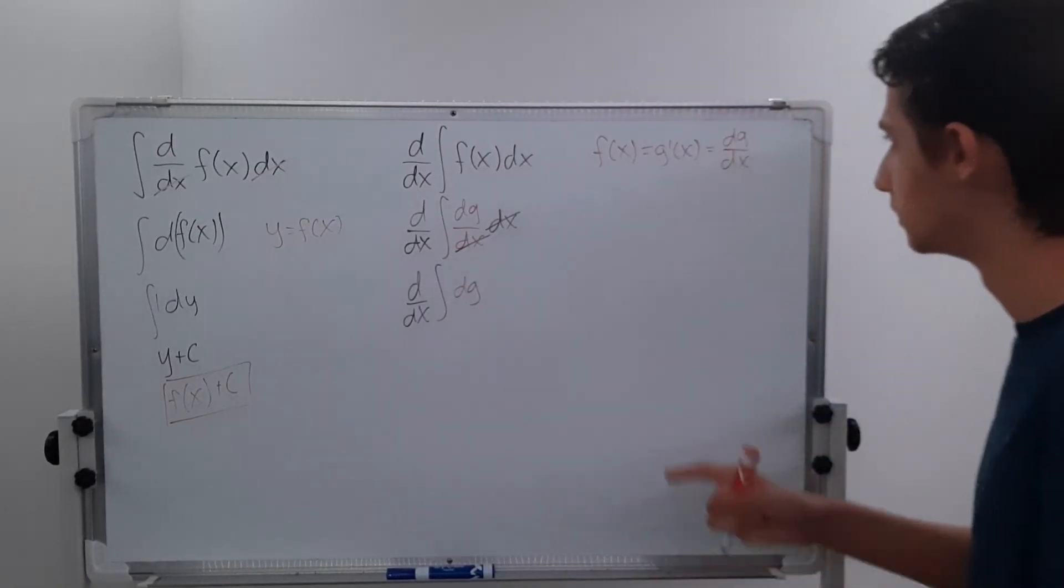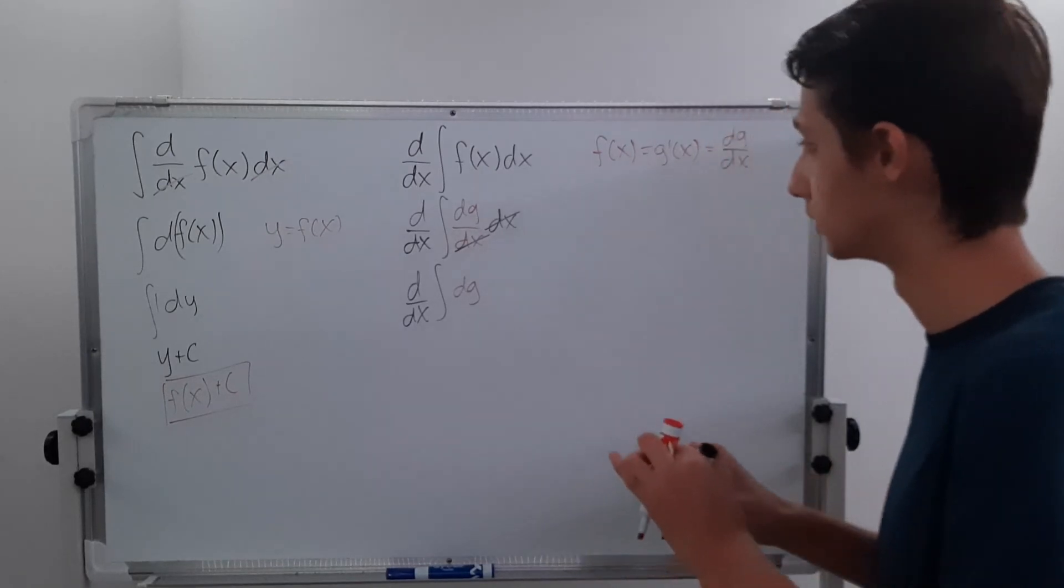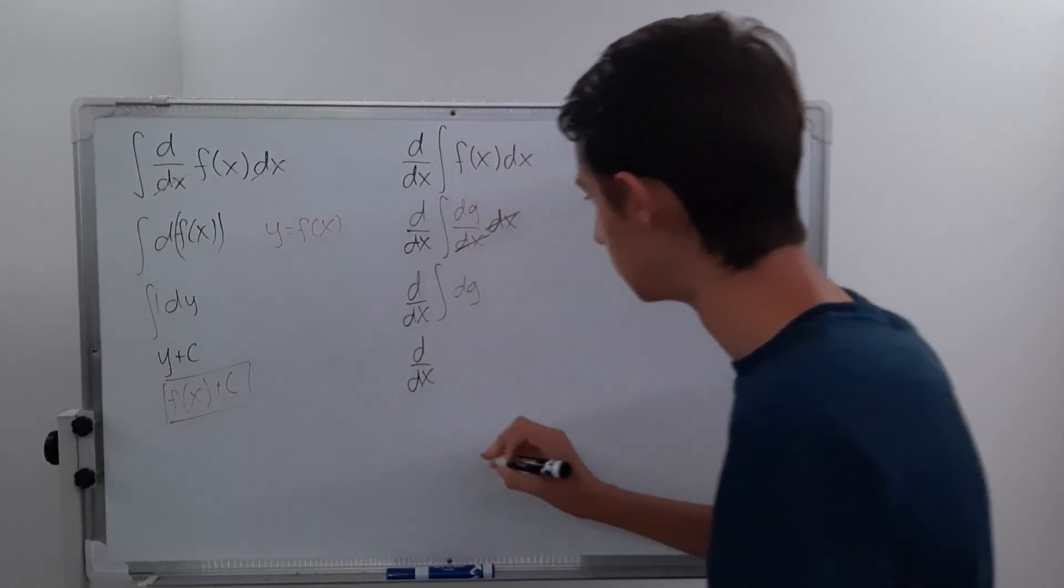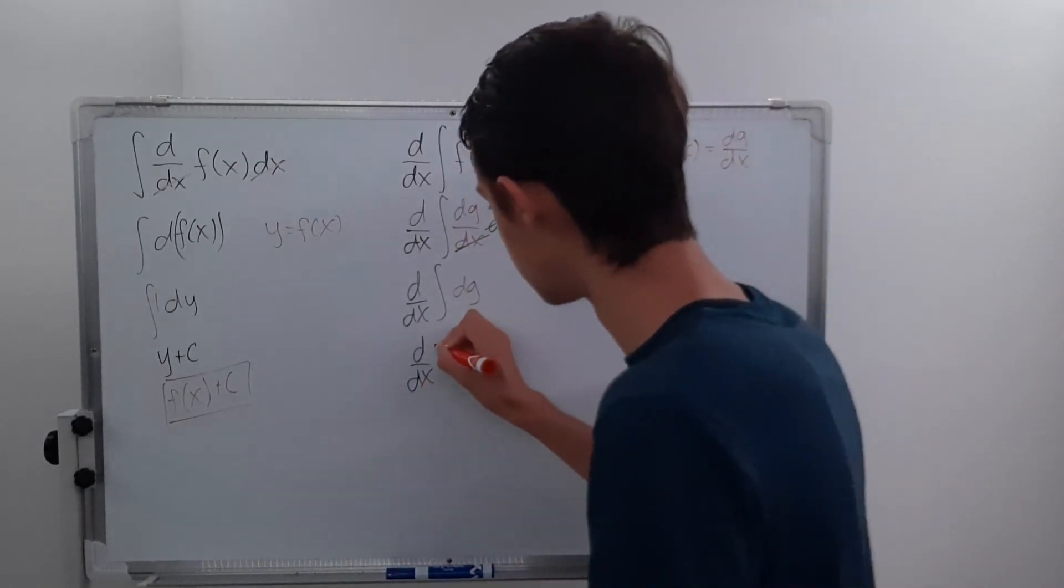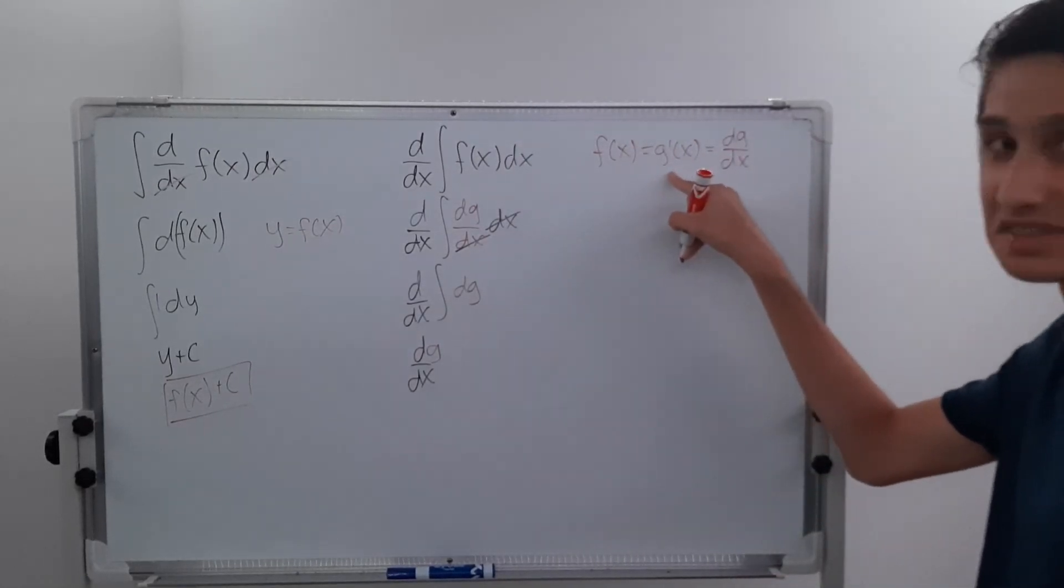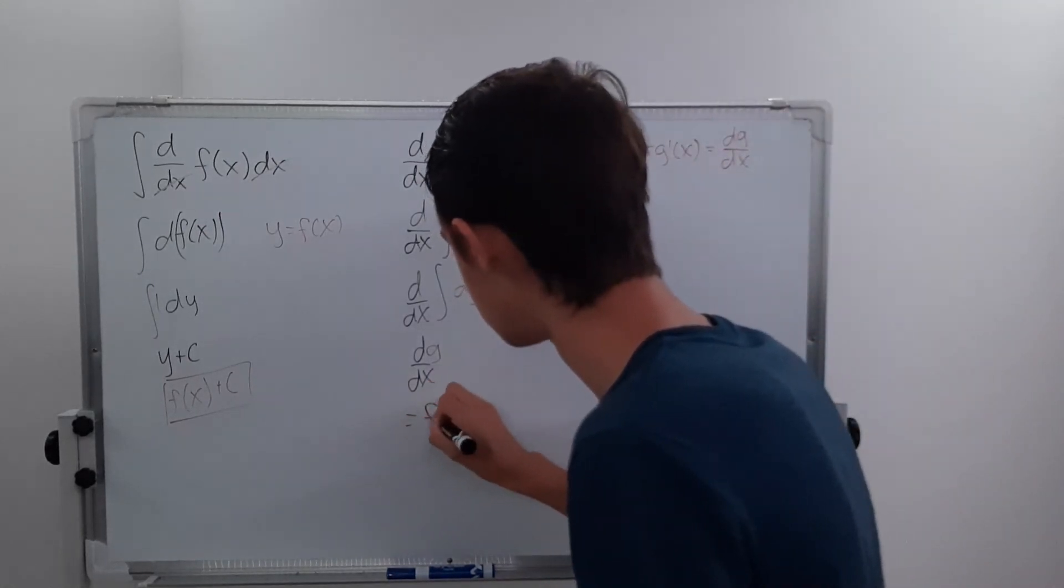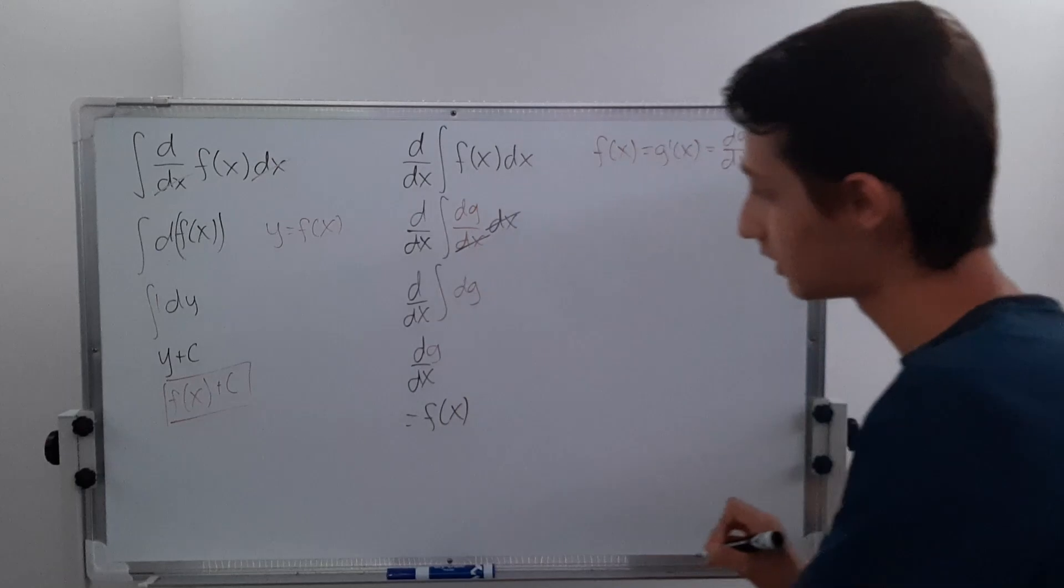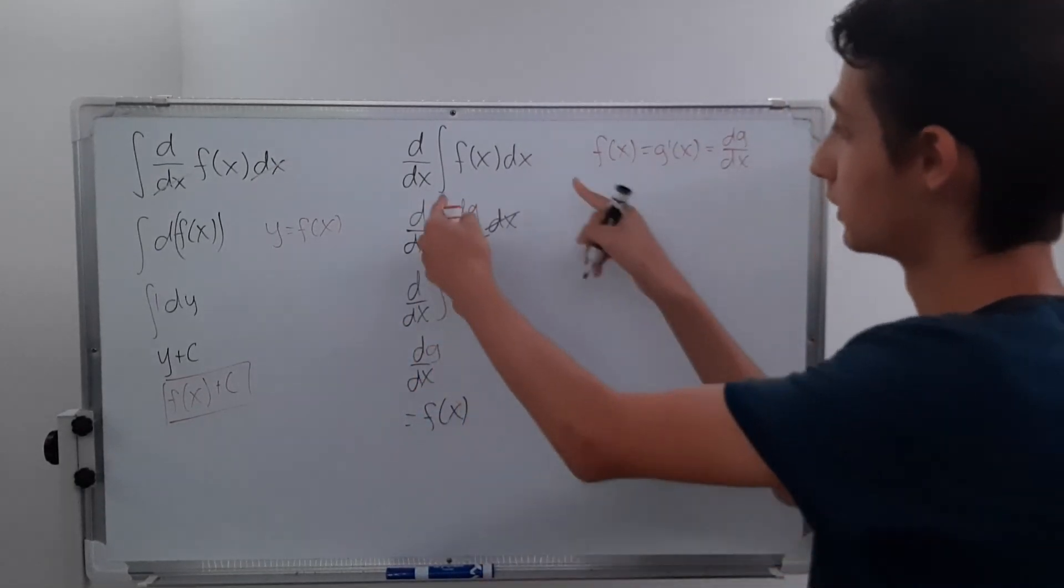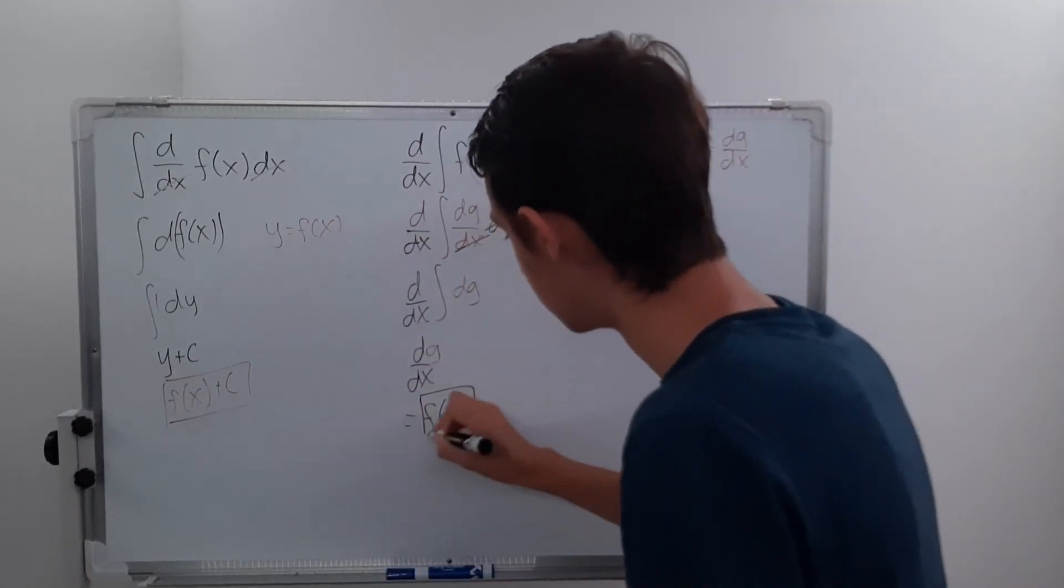Okay. So the integral of dg is just going to be g, which is g of x. So we have d dx of g. And I can write that up here. And dg dx is g prime of x, which is our original function. So we're left with f of x. No plus c because the derivative kind of gets rid of the plus c. So we could end up with the plus c here, but then the derivative is just going to get rid of it. So that is our answer.